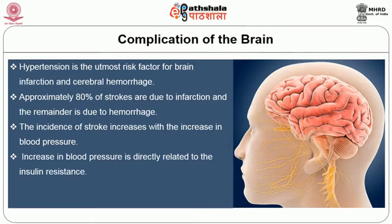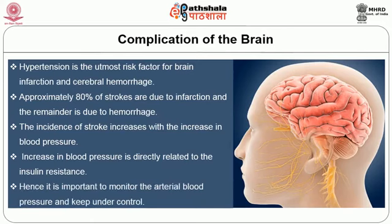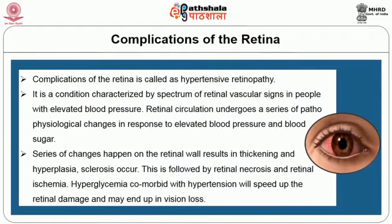Increase in blood pressure is directly related to insulin resistance, hence it is important to monitor arterial blood pressure and keep it under control. Complications of the eye or retina lead to hypertensive retinopathy, characterized by a spectrum of retinal vascular signs in people with elevated blood pressure. Retinal circulation undergoes pathophysiological changes in response to elevated blood pressure and blood sugar, resulting in thickening, hyperplasia, sclerosis, retinal necrosis, and retinal ischemia. Hyperglycemia comorbid with hypertension will speed up retinal damage and may end up in vision loss.